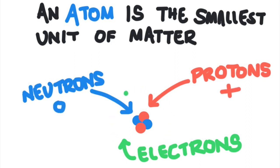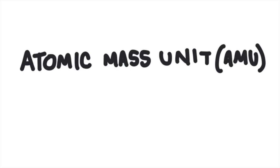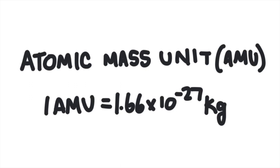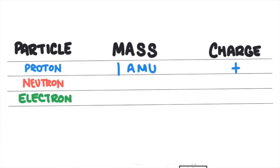Protons have a positive charge and give mass to the atom. Neutrons have no charge, but they also give mass to the atom. Protons and neutrons have about the same mass — about 1.66 times 10 to the negative 27 kilograms. That number is so tiny that scientists created a new unit called the atomic mass unit, or AMU for short. One AMU is about 1.66 times 10 to the negative 27 kilograms. So one proton has a mass of 1 AMU, and a neutron also has a mass of 1 AMU. Electrons have a negative charge and are so tiny that their mass is 0 AMU — electrons do not contribute to the mass of an atom.